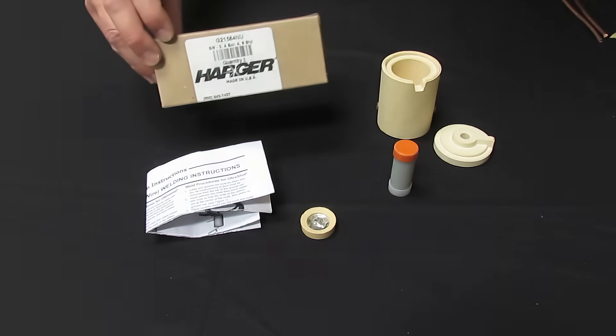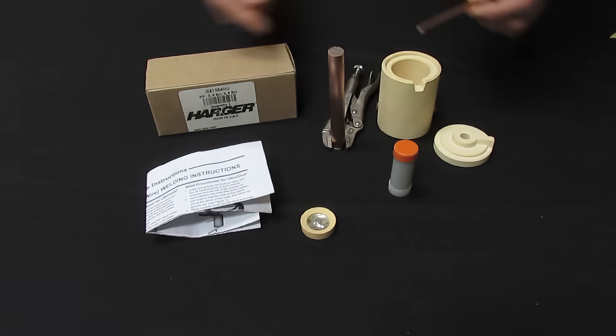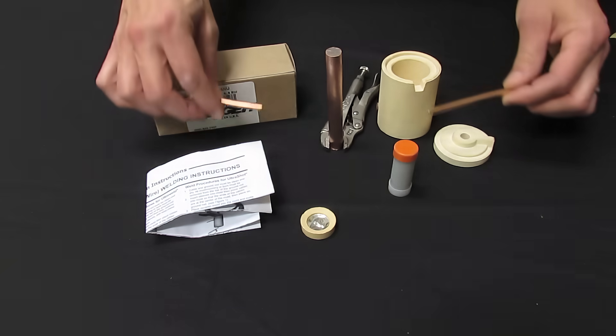So these are the items that are included in the box. Everything you need except for the ground rod and the wires that you're going to attach to the ground rod.